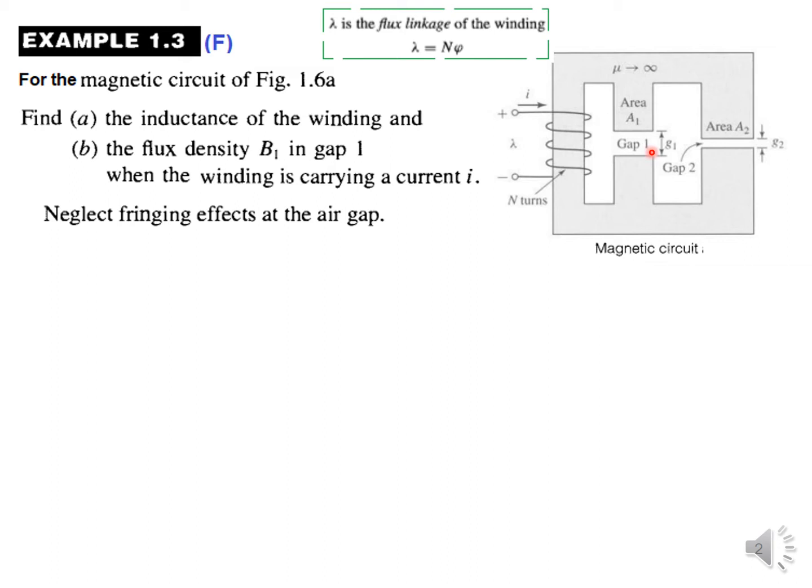The area of cross section of the first one is A1, and the area of cross section of the second one is A2.